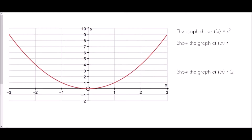We're going to begin with a graph showing x squared, using the function notation. Basically it is just the same as saying y equals x squared. What we want to show on the graph is the graph of f of x plus 1. So if f of x is x squared, what we're looking for is the graph of x squared plus 1.